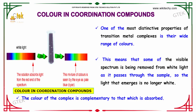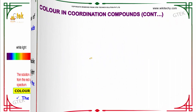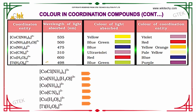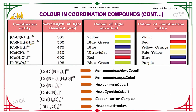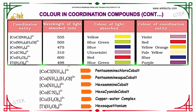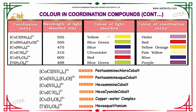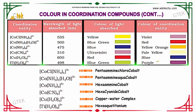The color of the complex is complementary to that which is absorbed. Here is a table showing color in coordination compounds — the coordination entities, the wavelength of the light absorbed, the color of light absorbed, and the color of the coordination entities.